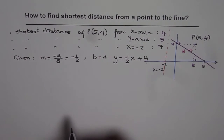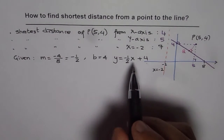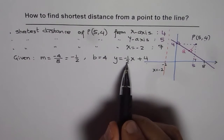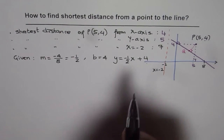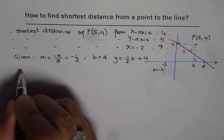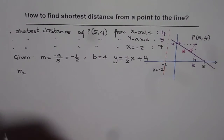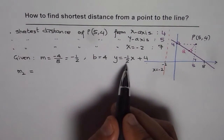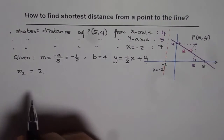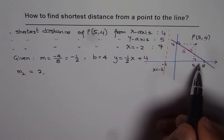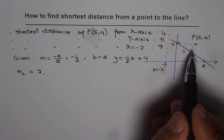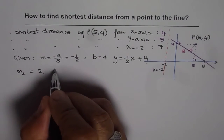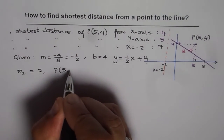Now we know the equation of the line. Any line perpendicular to this line will have a slope that is the negative reciprocal. The perpendicular line's slope should be the negative reciprocal of minus half, which is 2. That perpendicular line must also pass through the point (5, 4).